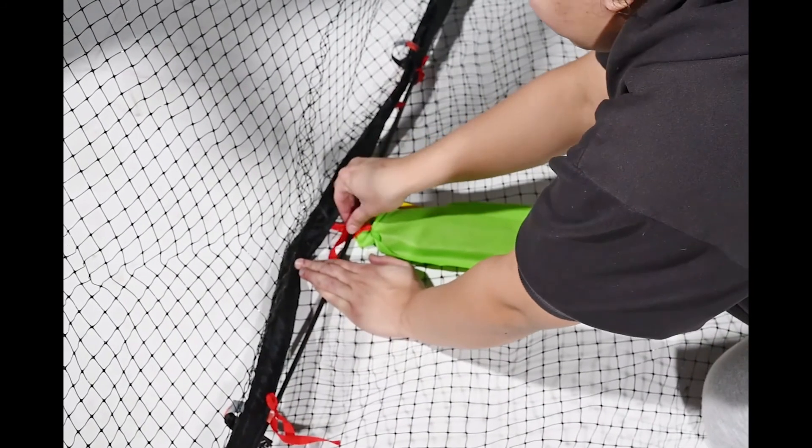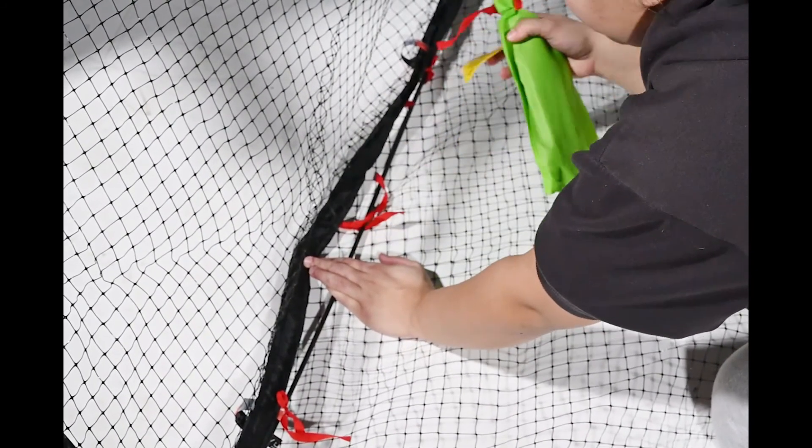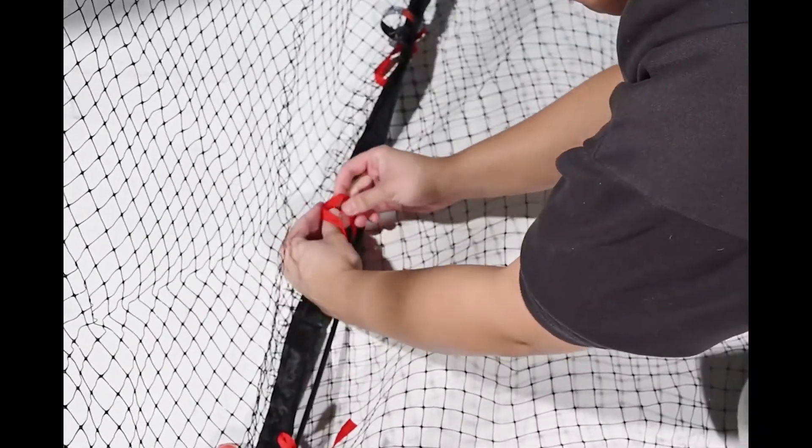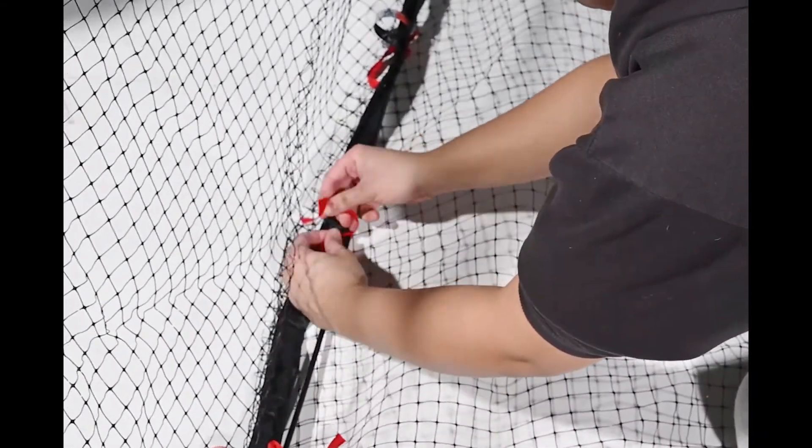Step 6: Remove ground stakes from inside cover. Step 7: Tie all inside strings around fiberglass frames to secure cover to the rods.